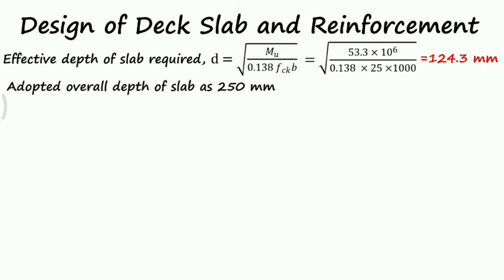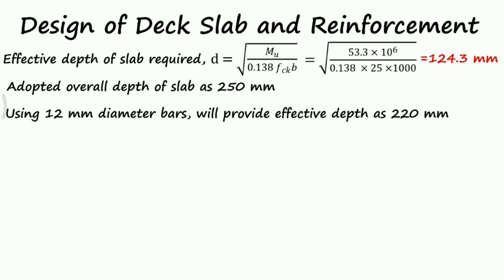In lecture 1, we already adopted the overall depth of the slab as 250 mm. Using 12 mm diameter bars will provide effective depth as 220 mm. Since D required is 124.3 mm and D provided is 220 mm, hence this depth provided is safe.